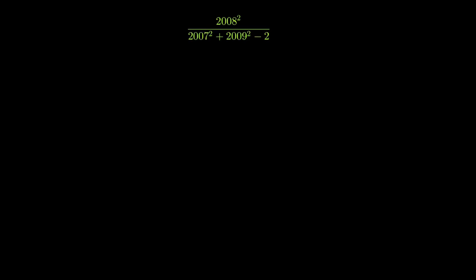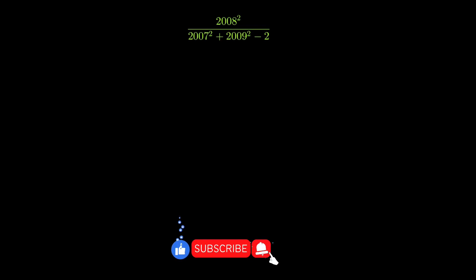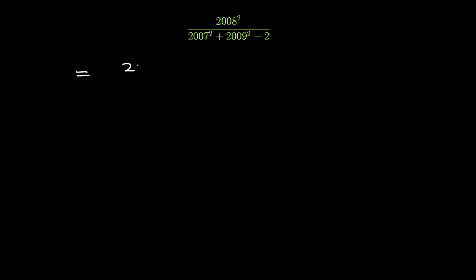Hello everyone. In this video I am going to solve this given expression: 2008 squared over 2007 squared plus 2009 squared minus 2. This expression can be written as 2008 squared over 2007 squared plus 2009 squared minus 2.